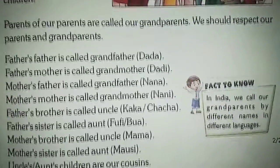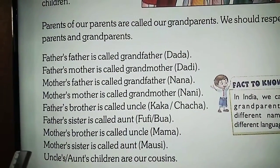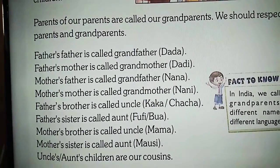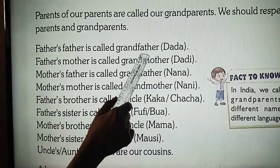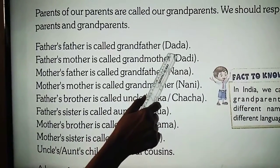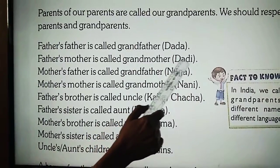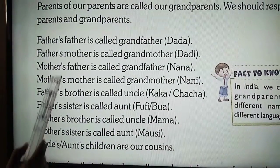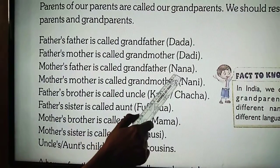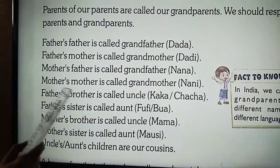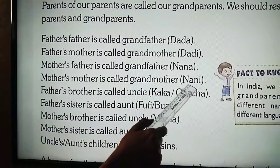Now we will talk about the relations of family members and relatives. Father's father is called grandfather, or dadaji. Father's mother is called grandmother, or dadi. Mother's father is called grandfather, or nana. Mother's mother is called grandmother, or nani.